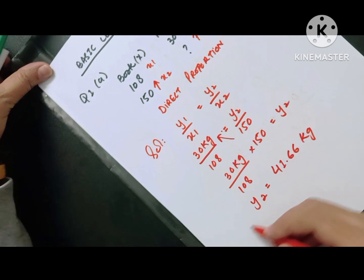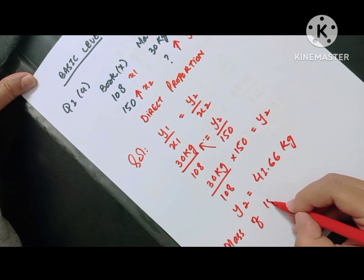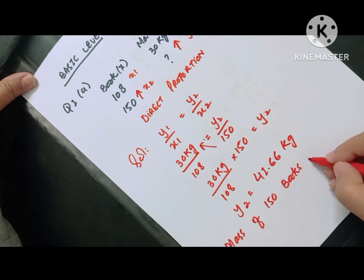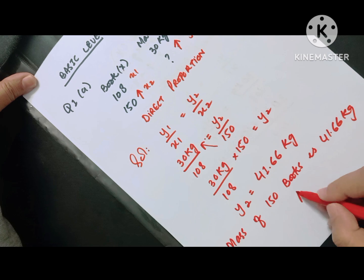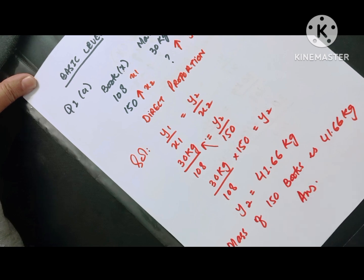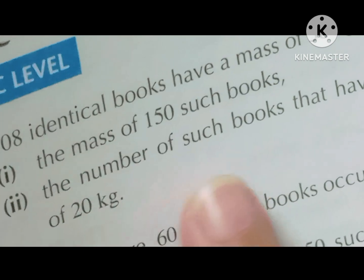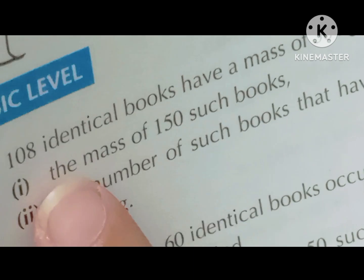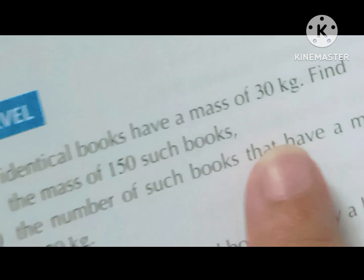By doing the multiplication and cancellation, we get 41.66 kg. So the mass of 150 books is 41.66 kg — that is our answer for part A. Now in part B, they are asking: find the number of such books that have a mass of 20 kg.